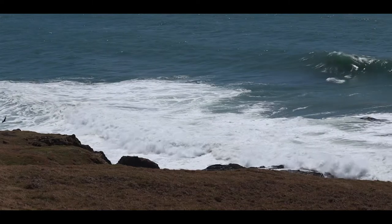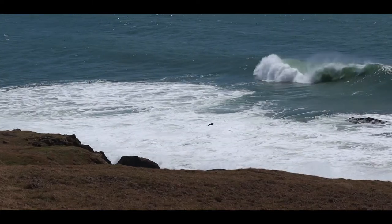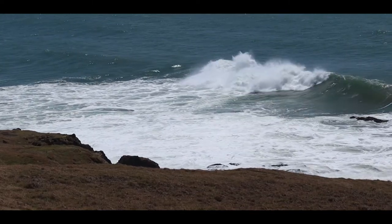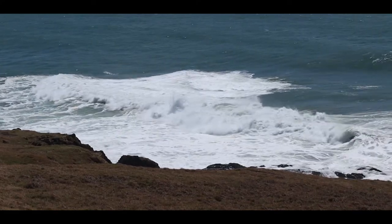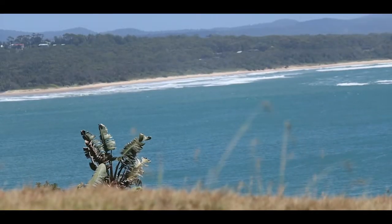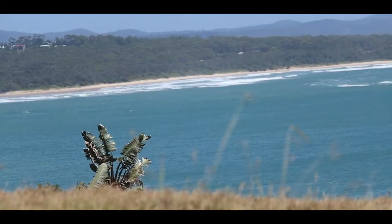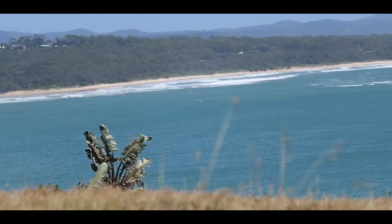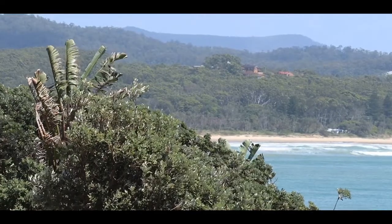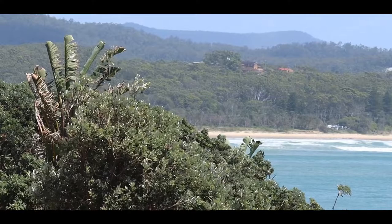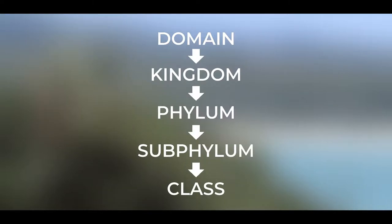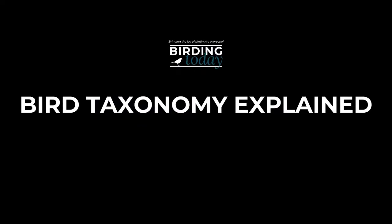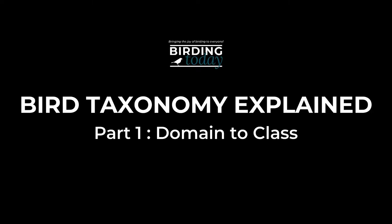Before we jump in, I should note that avian taxonomy is a complicated and often messy business, and there are many layers and angles from which to discuss the topic. I will do my best to keep the information in this video series simple and clear, whilst also exploring the complex and different ways in which we classify birds biologically. In this first video of the series, we'll mostly be focusing on the taxonomic ranks of domain, kingdom, phylum, subphylum and class. Welcome to Bird Taxonomy Explained, Part 1: Domain to Class.